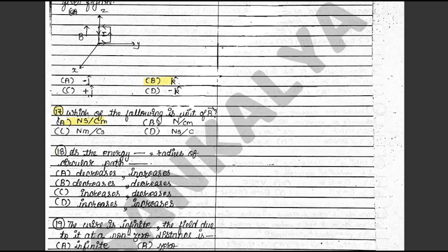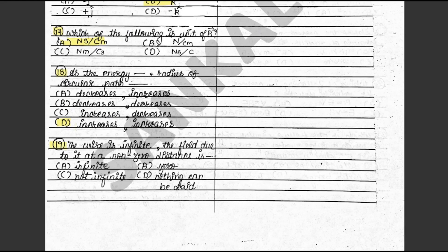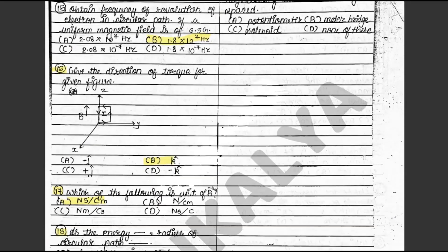Question 18: As the energy dash, the radius of the circular path dash. The answer is D: increases, increases. This is on textbook page 141. Question 19: The wire is infinite. The field due to it at a non-zero distance is dash. The answer is C: non-infinite. This is on textbook page 148.